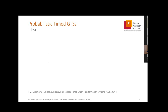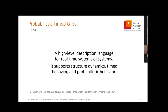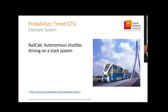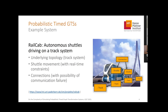Probabilistic time graph transformation systems were first presented at ICGT four years ago and are a high-level description language for real-time systems of systems, which supports structural dynamics, time behavior, and probabilistic behavior. Our example is the rail cap system, a system of autonomous shuttles driving on a track system. We have a track topology with static nodes, shuttles moving with real-time constraints on how long a shuttle can stay on a track, and connections that might fail — that's the probabilistic behavior.